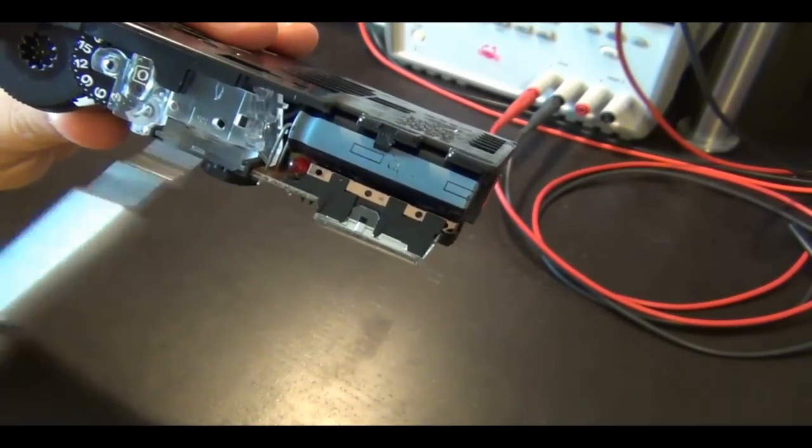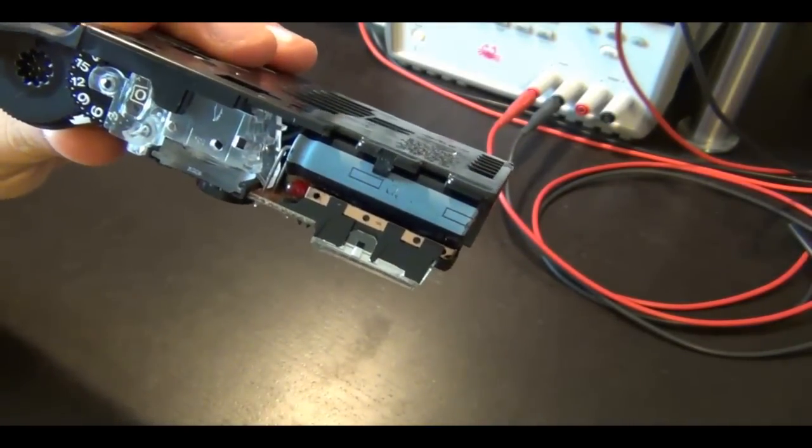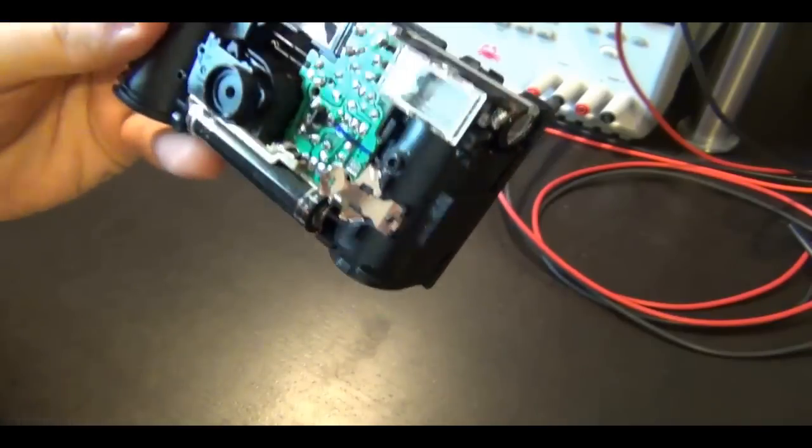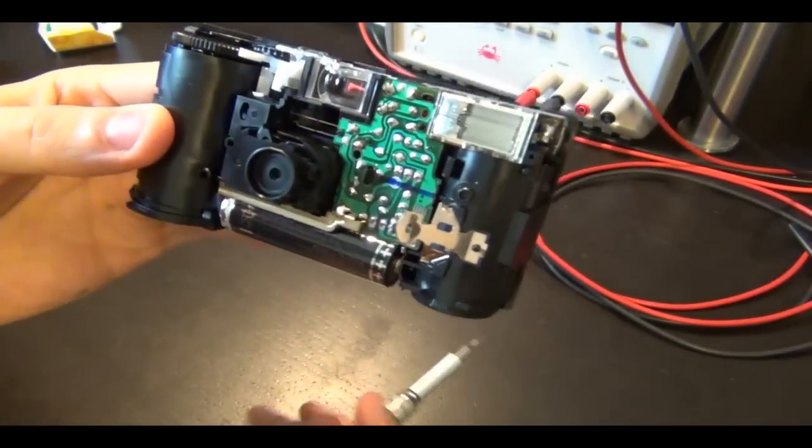Interestingly enough, I took apart another identical camera and that one had a neon lamp inside. So we'll talk a little bit about that when we're analyzing the circuit. So let's try and run this flash once and fire it and see how it works.